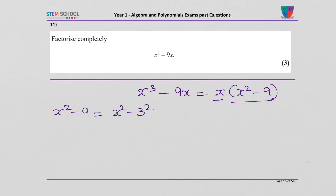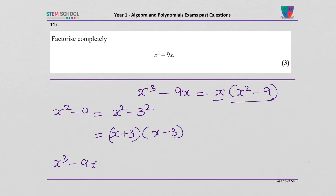That's the difference of two squares, and that becomes (x + 3)(x - 3). So the cubic x³ - 9x factorizes completely as x(x + 3)(x - 3).